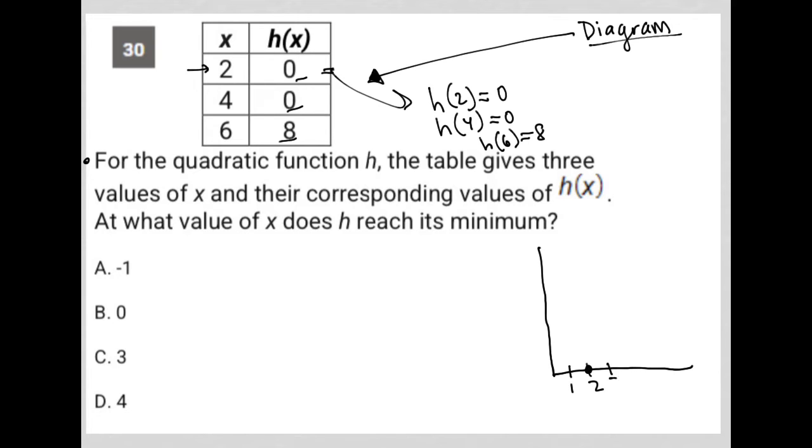And then 3, 4, when h of x is 4, we are also on the x-axis. So those are two x-intercepts. And then when x is 6,